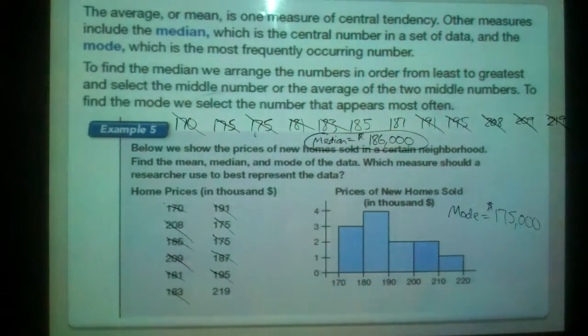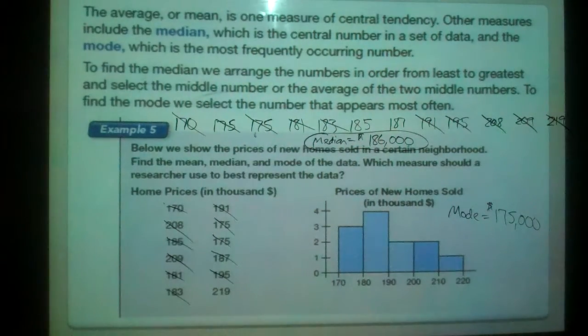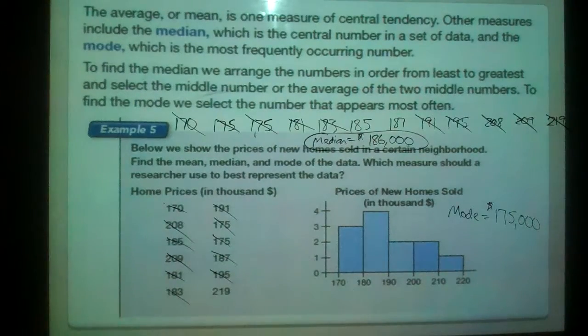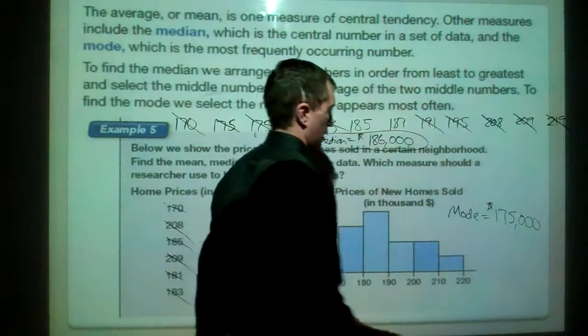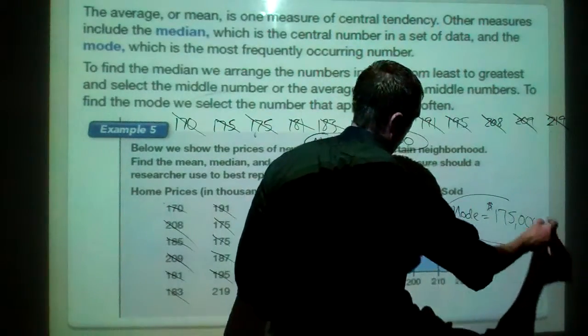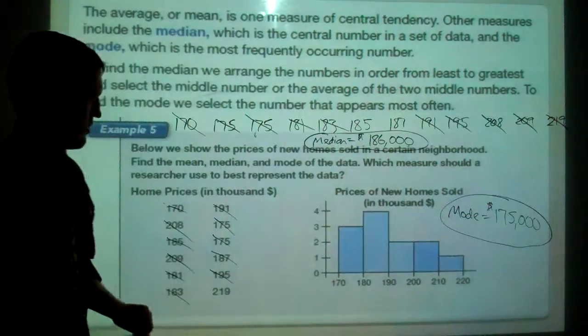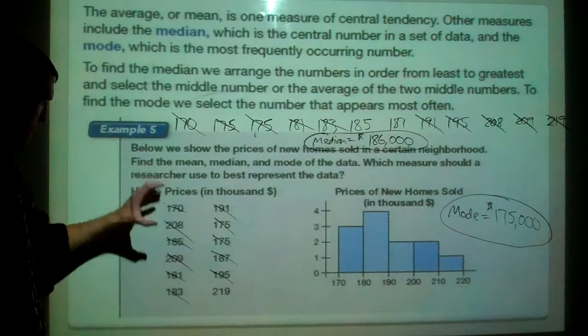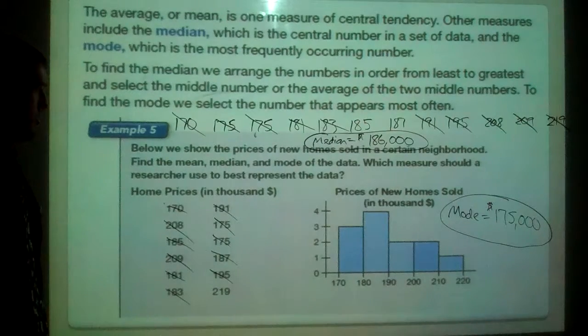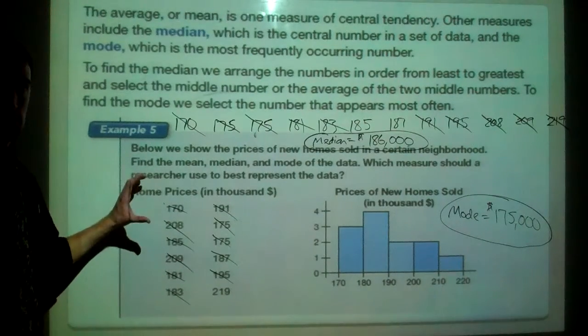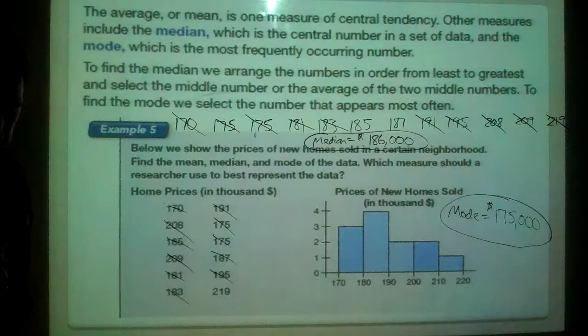I'm going to check my time real quick. We're doing okay. All right. So median, 186,000. Mode, 175,000. Our average should be, once we add up all these numbers and divide by 12, we should get our average. This solution is in your book if you do want to look at that.